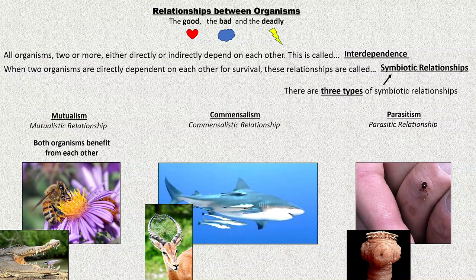Commensalism: you see a shark with little fish called remora that swim behind it. When the shark eats, all the scraps of food go behind it — these little fish get easy food and probably also get protection. The shark, however, is not affected at all — it's not hurt, it doesn't benefit, it's unaffected. So commensalism is when one organism benefits and the other neither benefits nor is harmed.